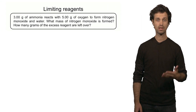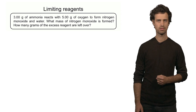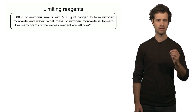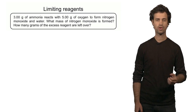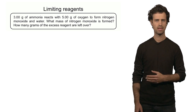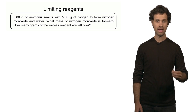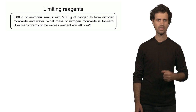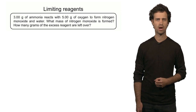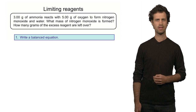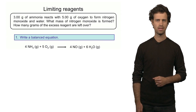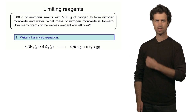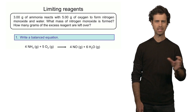In this example we have a reaction that involves ammonia and oxygen. They react to form nitrogen monoxide and water. The question is to calculate first the amount of nitrogen monoxide formed, and the amount of grams left after the reaction of the excess reagent. To solve this problem, we first have to write down the balanced chemical equation. The reagents are ammonia and oxygen, and the products are nitrogen monoxide and water. This is a balanced equation — the number of atoms on each side are the same.